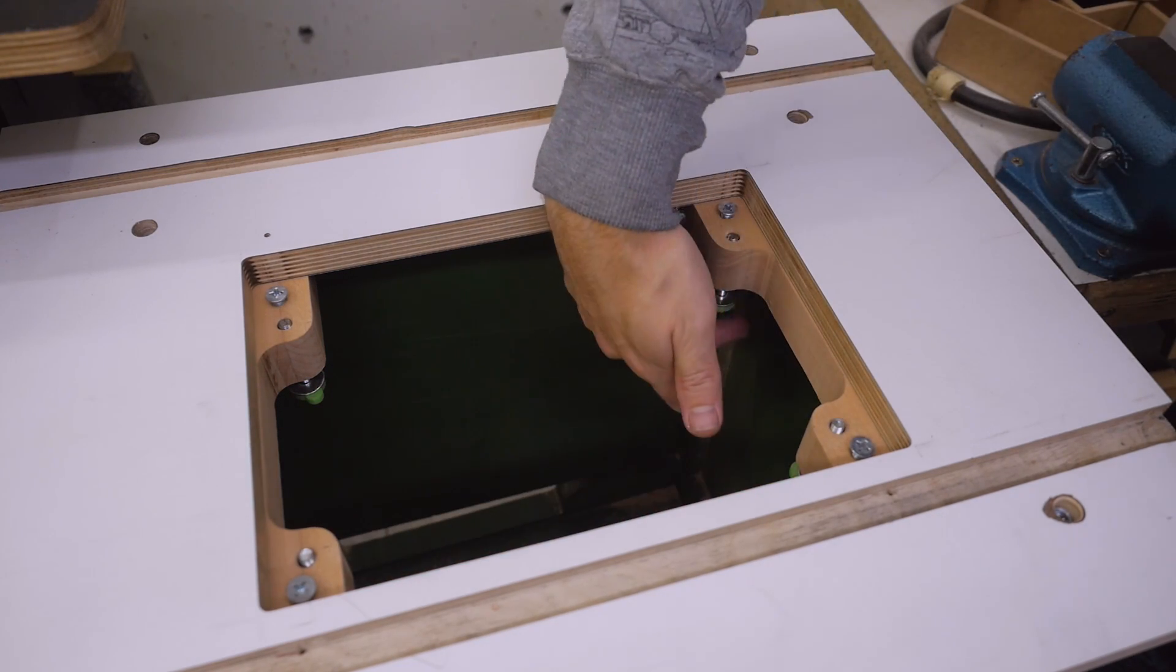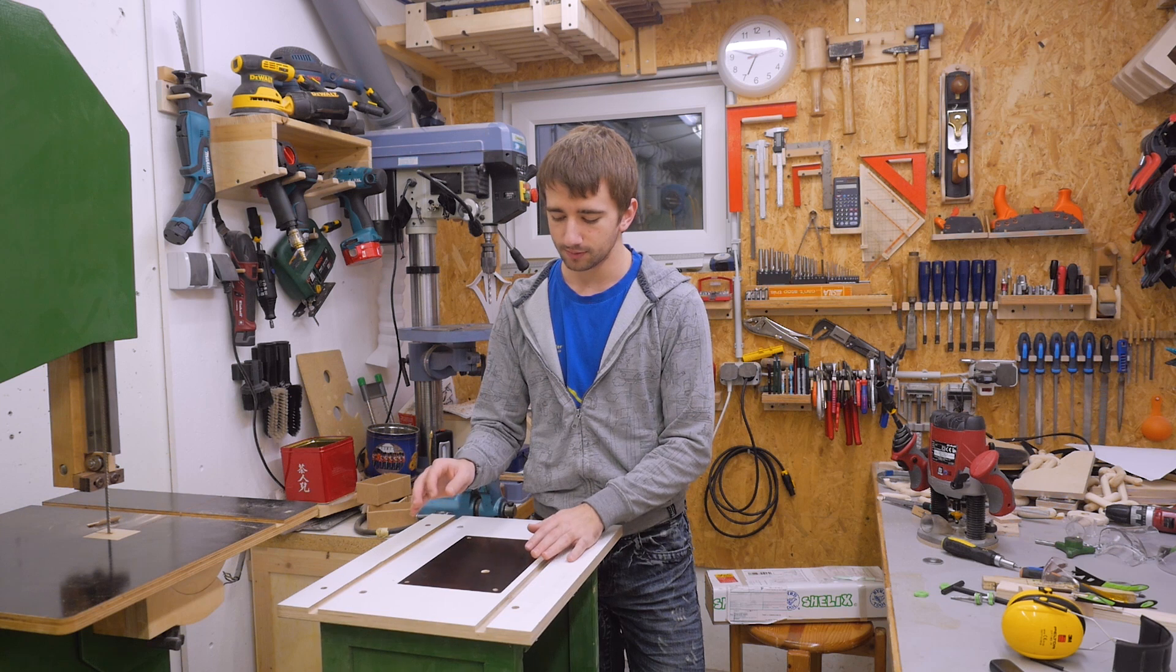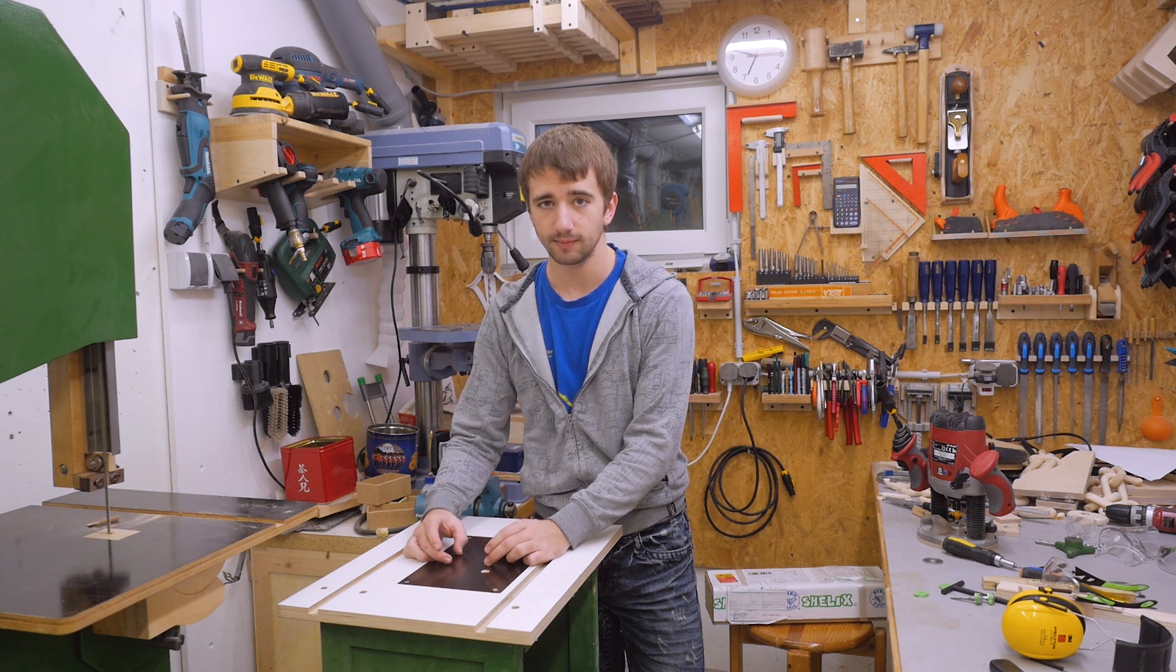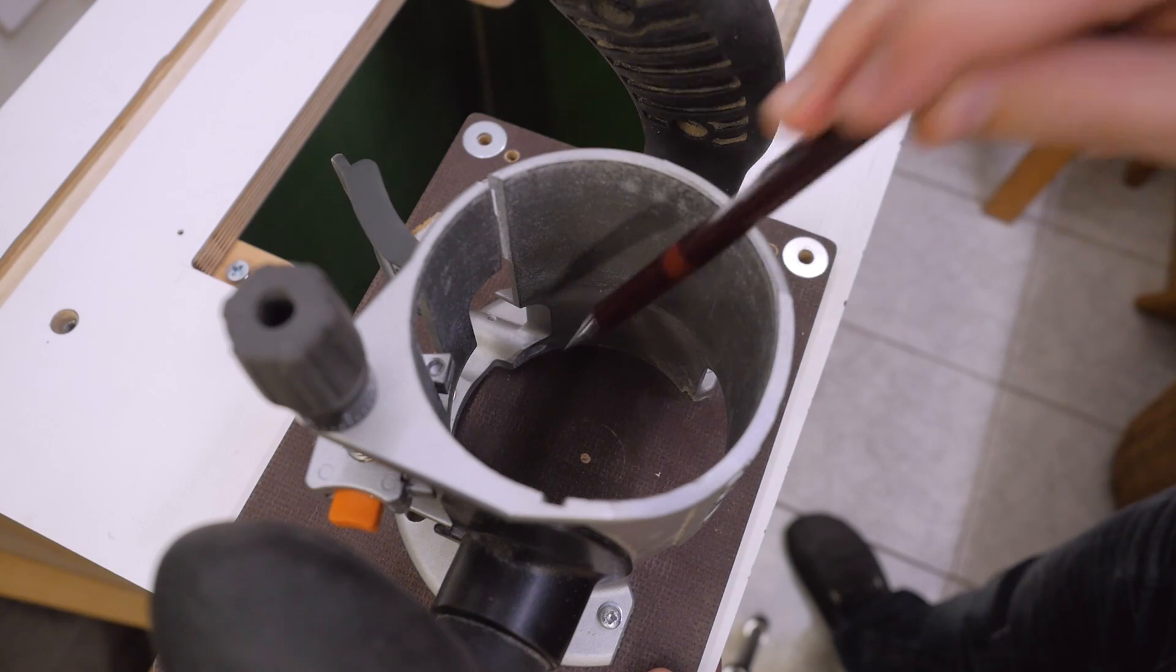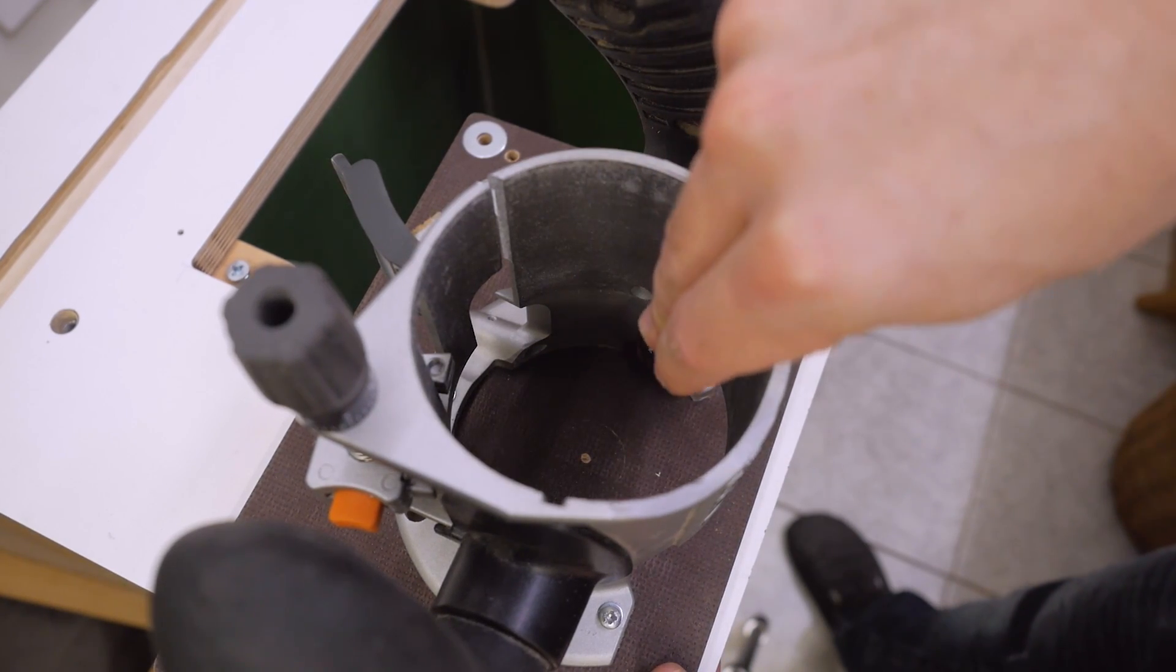I could not drill the hole where the router bits are, but I would still like to be able to change the router bits from above the table. Therefore I need to make another insert plate in the insert plate. I can make it as big as this circle of the base.